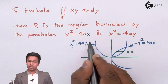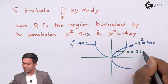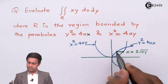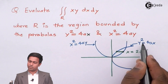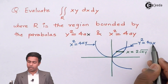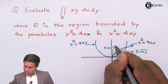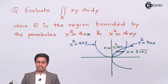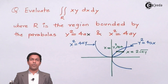From x² = 4ay, solving for x gives x = 2√(ay). The other end of the strip lies on y² = 4ax, giving x = y²/4a. So the strip extends from x = y²/4a to x = 2√(ay).